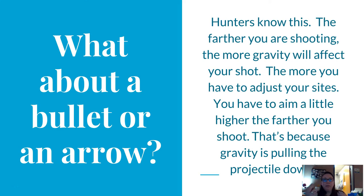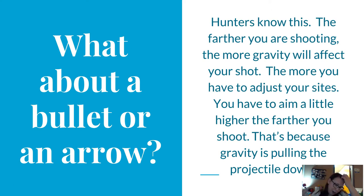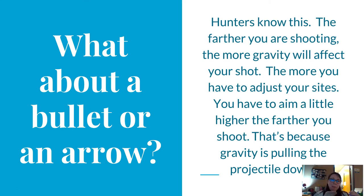But gravity is what gives everything that arc. If you ever shot a bow and arrow and missed the target — or missed the deer or whatever you're trying to shoot — your arrow will continue falling until it hits the ground. It might start straight at first, but then it will go down.